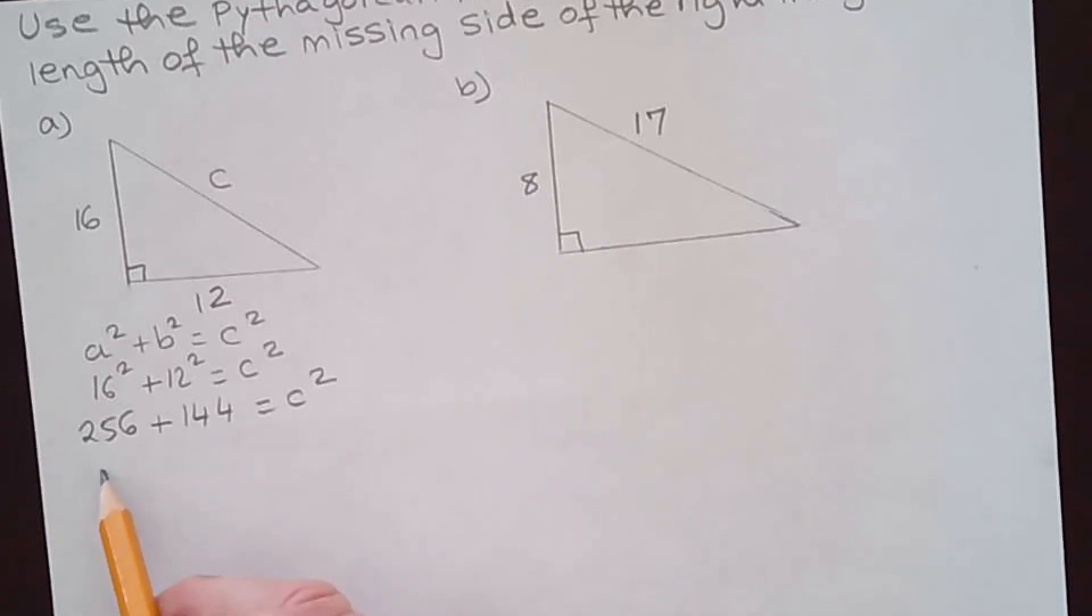Now add those numbers. 256 + 144, you get 400. Now c is the square root of 400, which is equal to 20.